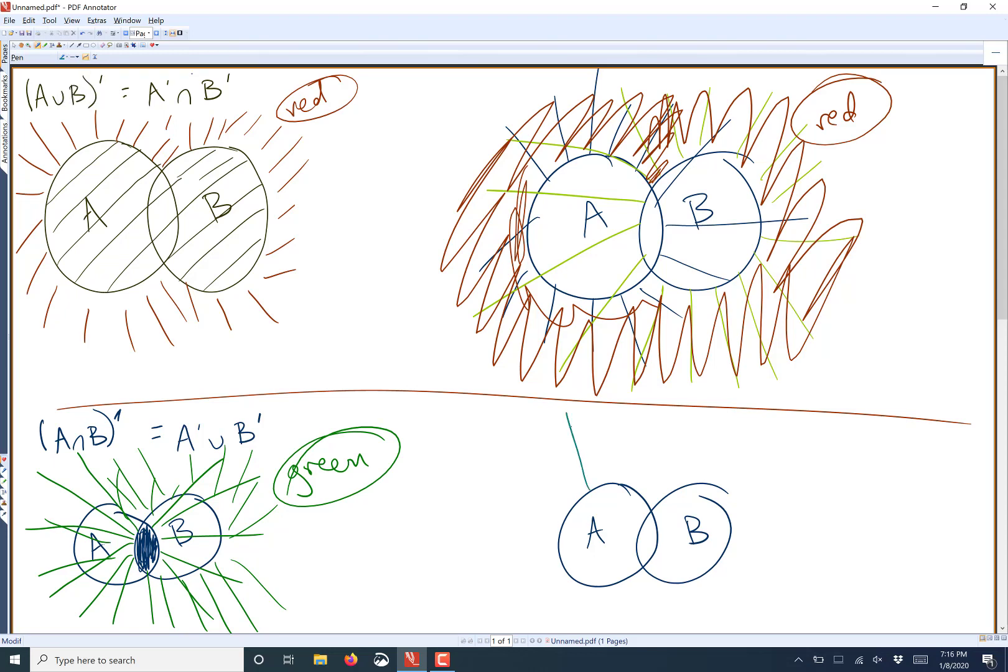So A complement would be everything going out from A, like this. And B complement would be everything going out from B, again, just like the sun here.